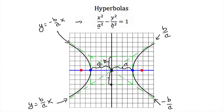The last thing we need to find is the location of the foci. Our foci are always on the transverse axis, and they are c distance away from the center of the hyperbola. The equation we use to find c is c squared equals a squared plus b squared. Note this is similar to an ellipse except a and b are added instead of subtracted. Once you know a and b, you can always find c — the distance along the transverse axis from the center to each focus.